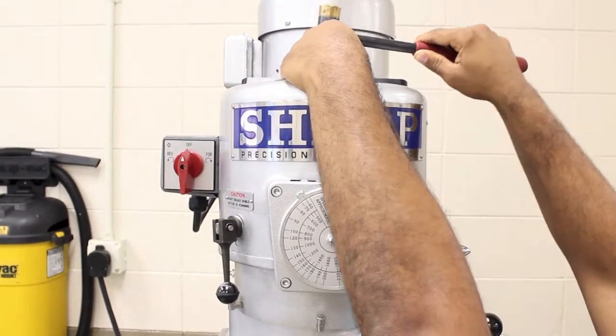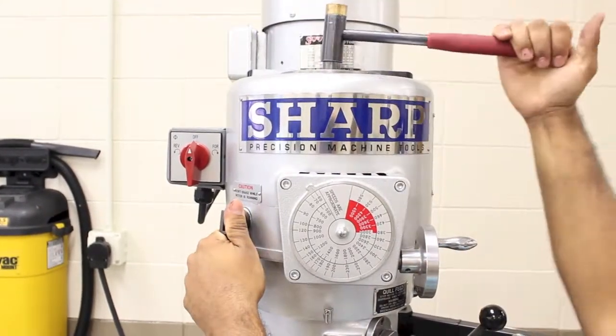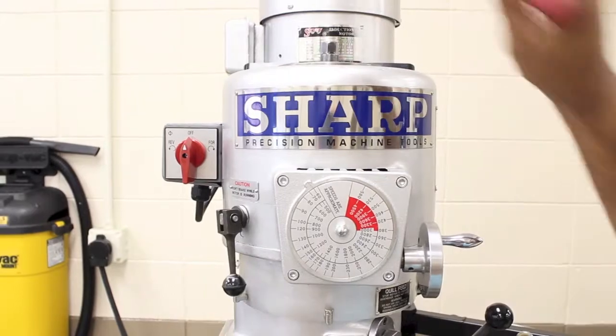The collet is tightened into place with the use of a closed-ended wrench. Notice how the brake is used to keep the spindle still while tightening.